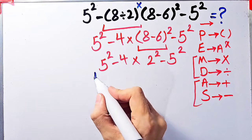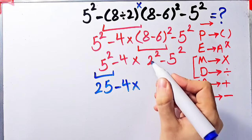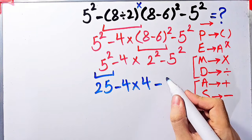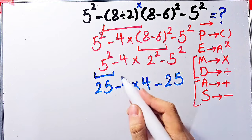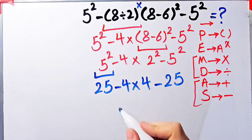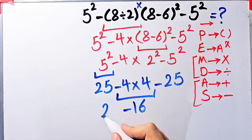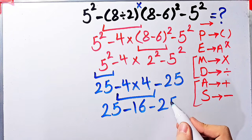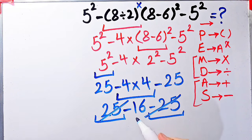Five to the power of two equals twenty-five. Now the question is twenty-five minus four, times two to the power of two which equals four, then minus five to the power of two which equals twenty-five. We have subtraction and multiplication. First we do this multiplication because multiplication has higher priority than subtraction: negative four times four equals negative sixteen. Now we have twenty-five minus sixteen, then minus twenty-five. The final answer of this question equals negative 16.